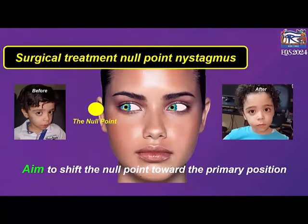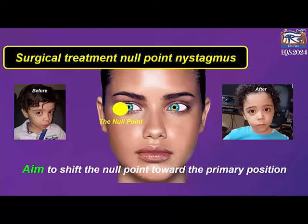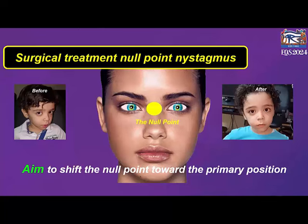The aim of surgical interference in cases of null point nystagmus is to shift this peripheral null point toward the primary position. Of course, this will correct the abnormal head posture and it will also affect the quality of visual acuity of the patient.